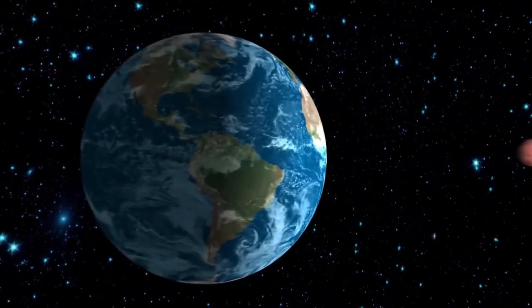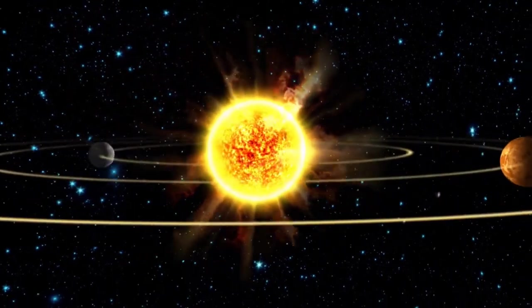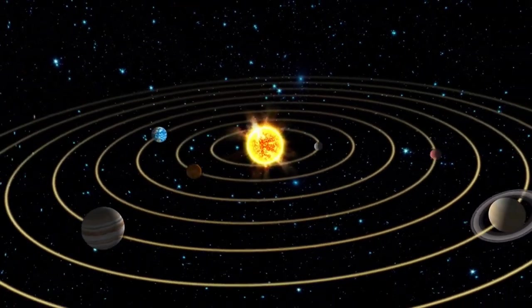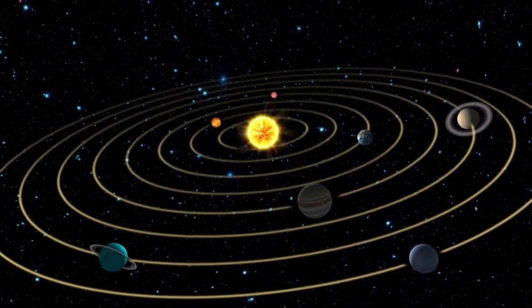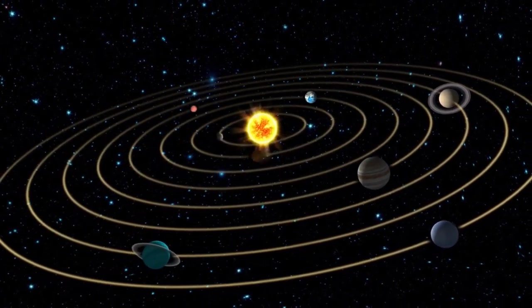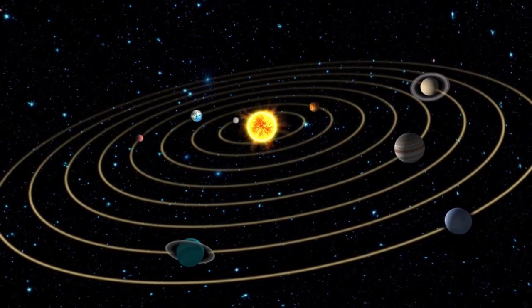Revolving around the sun are eight planets, divided into two categories based on their composition: terrestrial and jovian. The four terrestrial planets, Mercury, Venus, Earth, and Mars, are made of rocky material and have solid surfaces.